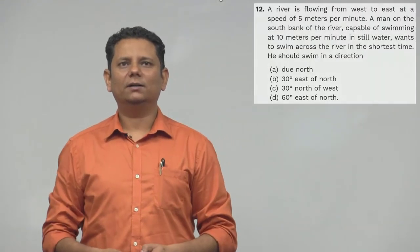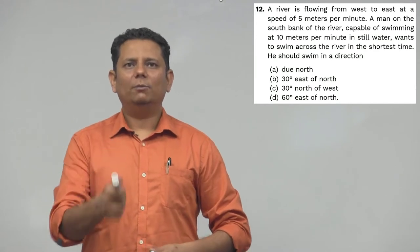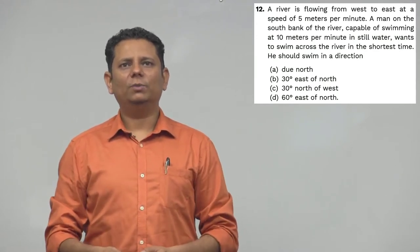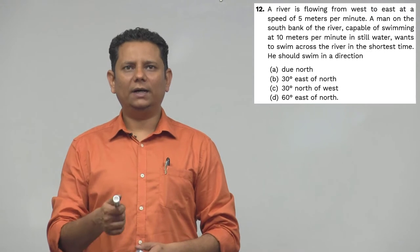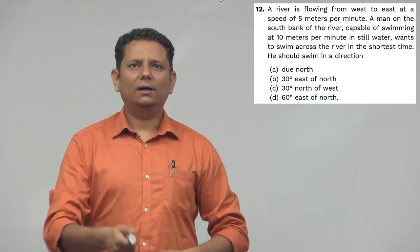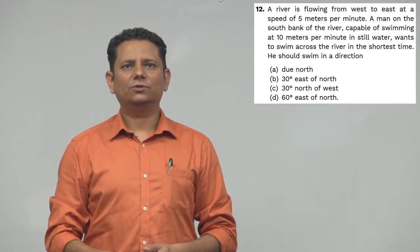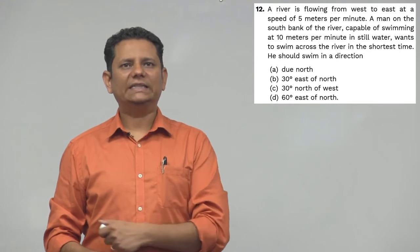The question says a river is flowing from west to east at a speed of 5 meters per minute. A man on the south bank of the river, capable of swimming at 10 meters per minute in still water, wants to swim across the river in the shortest time.